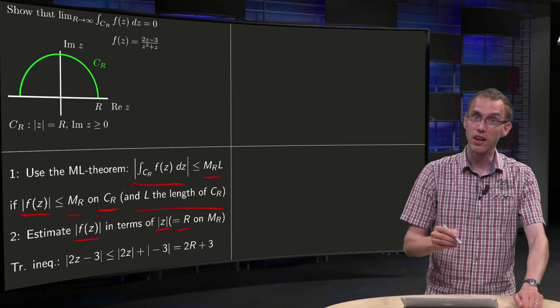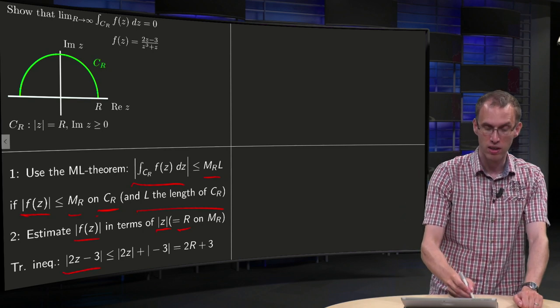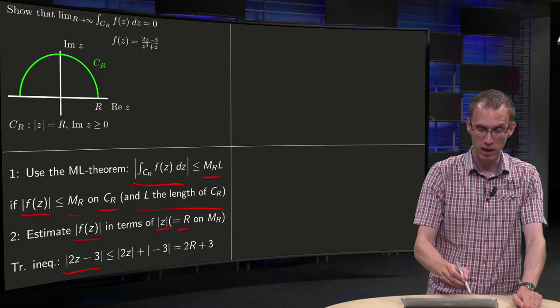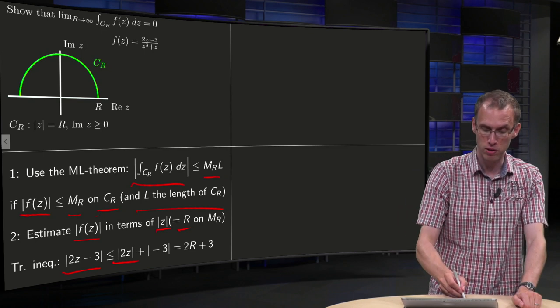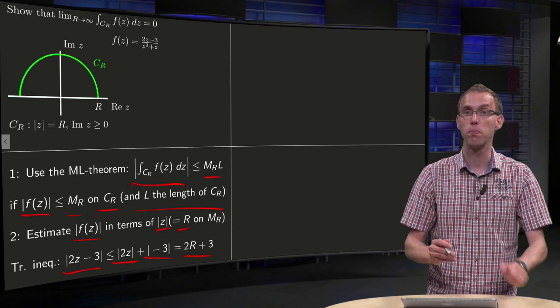Well, we can use the triangle inequality for the numerator. The norm of 2z minus 3 is smaller or equal than norm of 2z plus norm of minus 3 equals 2R plus 3.